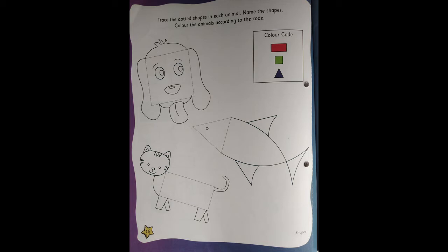Now children, what you are going to do is you are going to trace the shapes and you are going to color the animals. They have given color codes for each shape. See, in the color code box there is a rectangle, square and triangle.